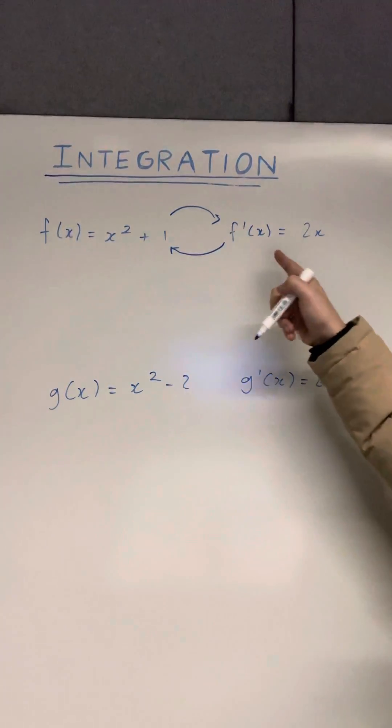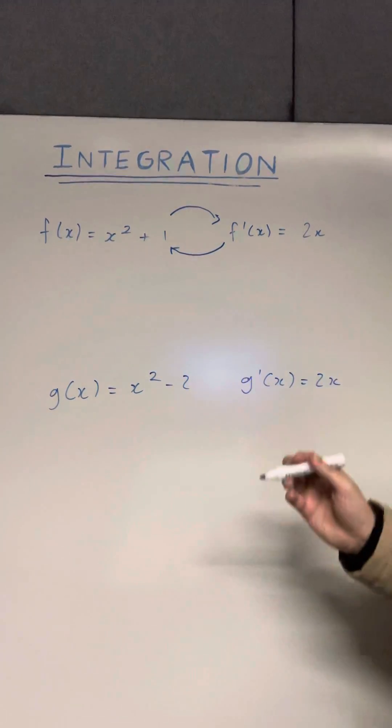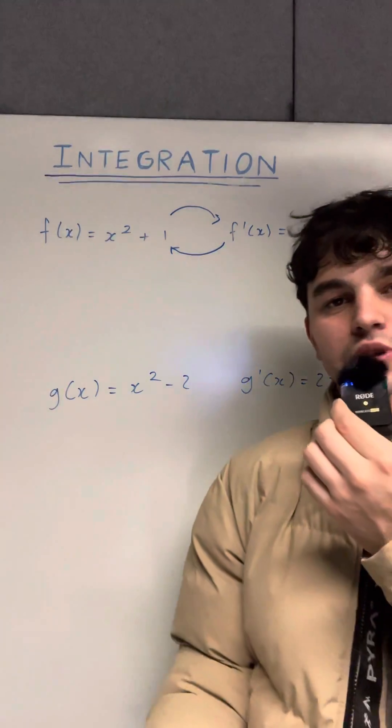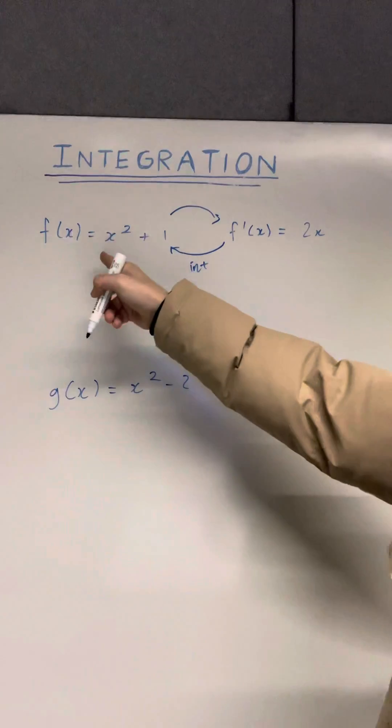So x squared becomes two x using our power rule. The constant gets canceled out because that has no effect on our derivative. Now integration is just the backwards of differentiation. So integration would take us from our derivative back to our original function.